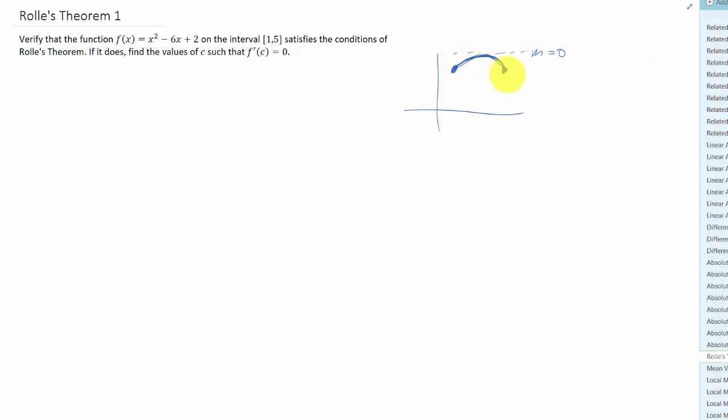Basically, it's like the what goes up must come down theorem. So we're asked to verify that this function on this interval satisfies the conditions of Rolle's theorem. The first condition is that this function is continuous on the given interval, and that is true.